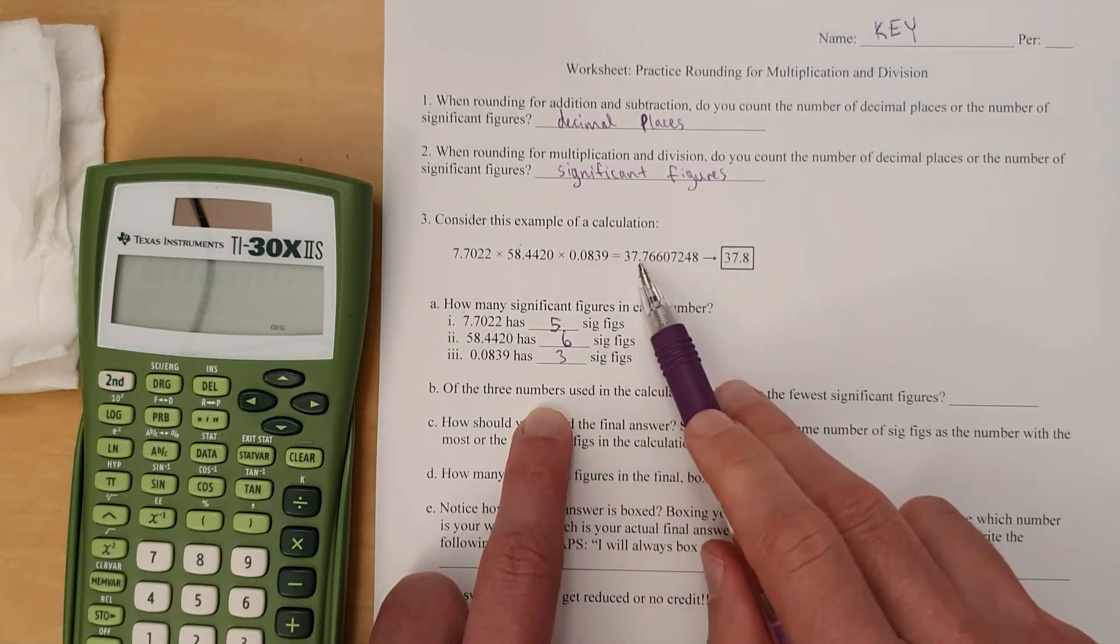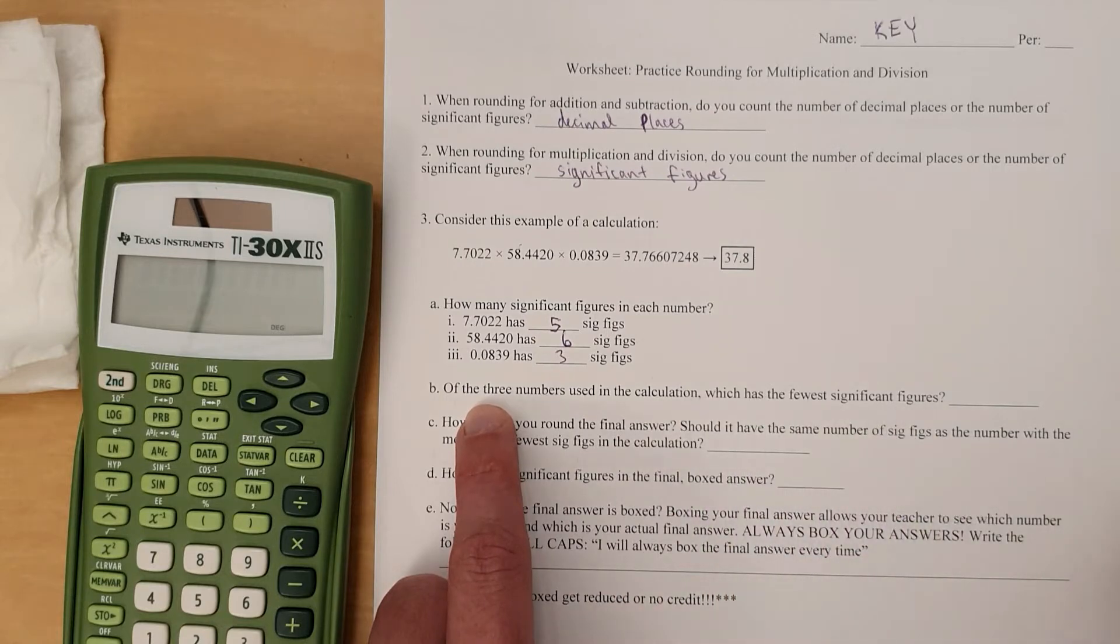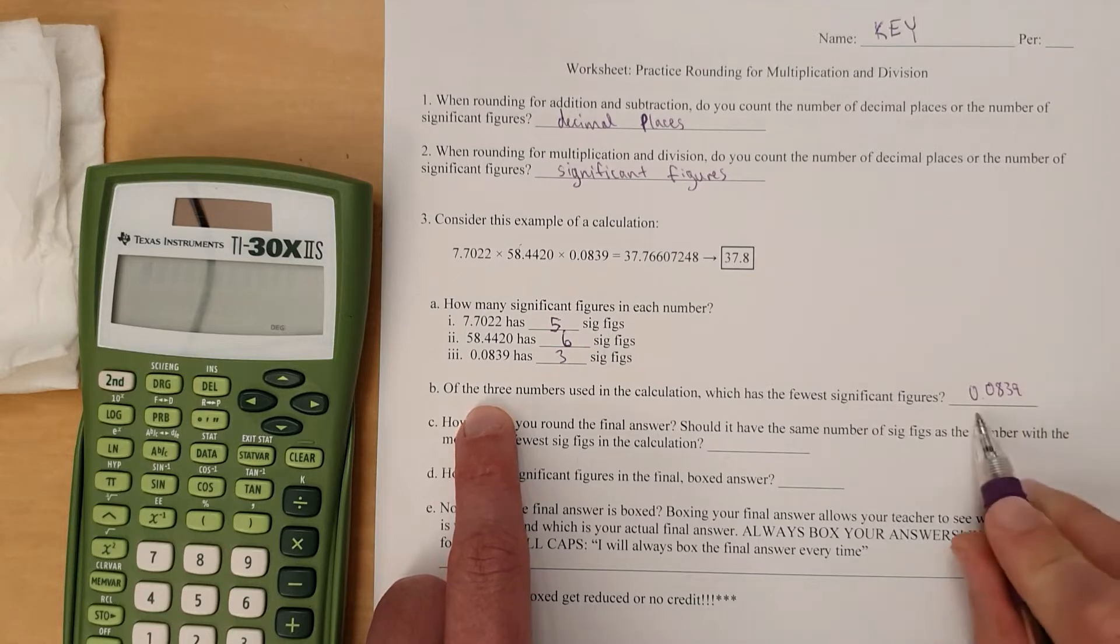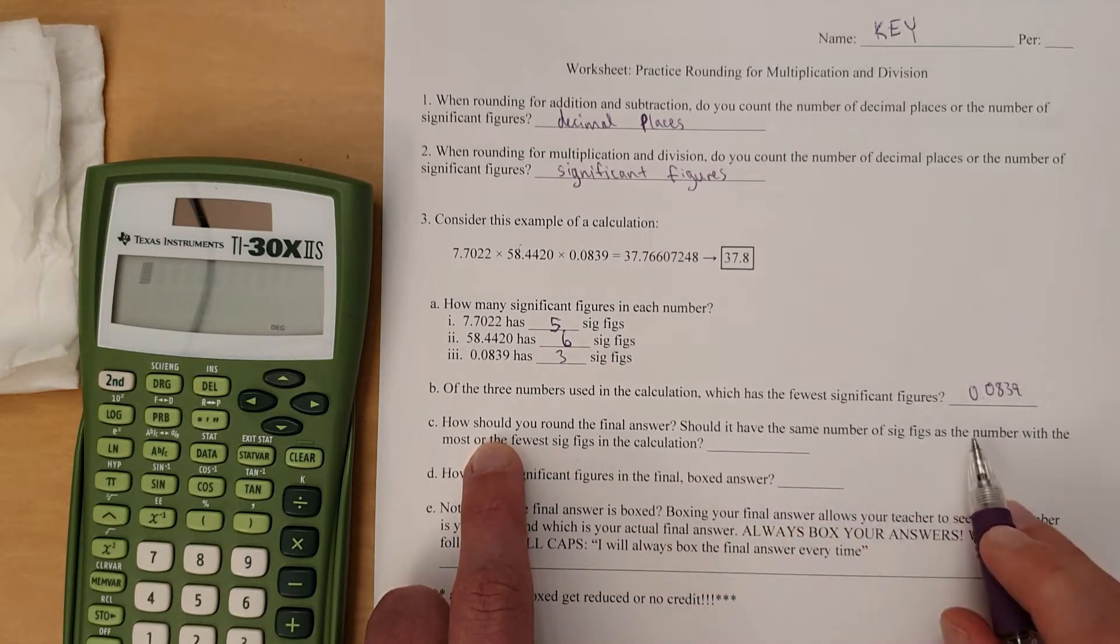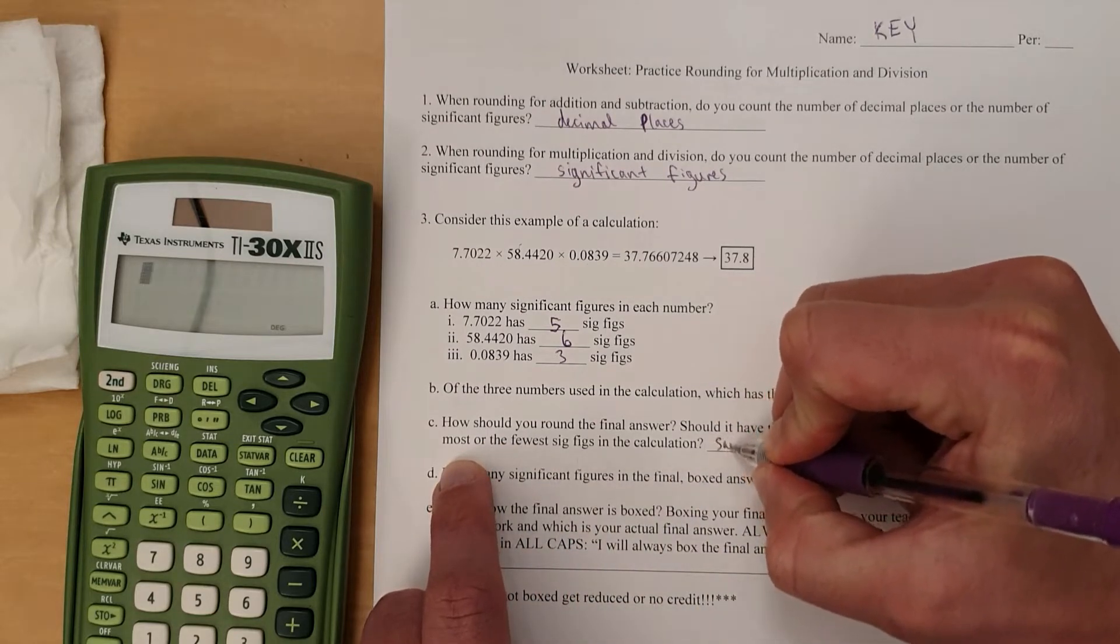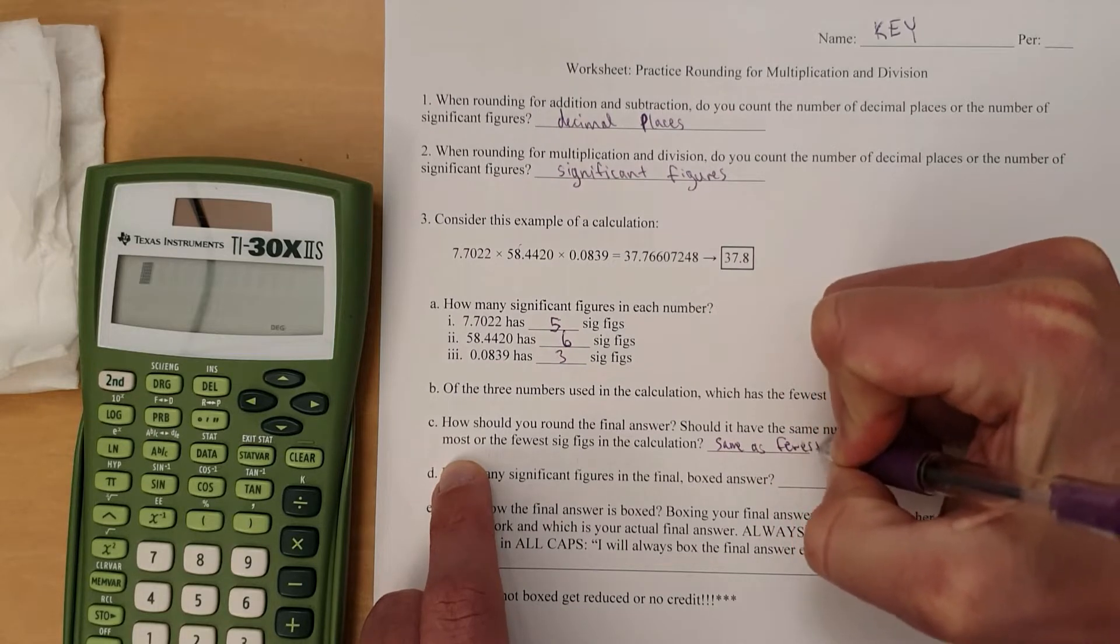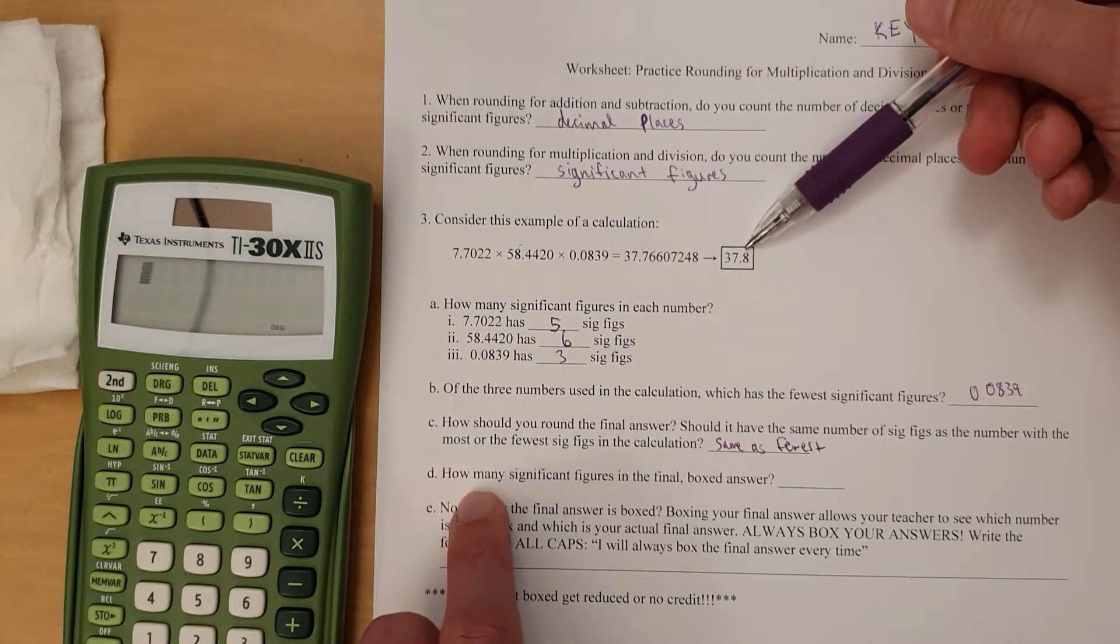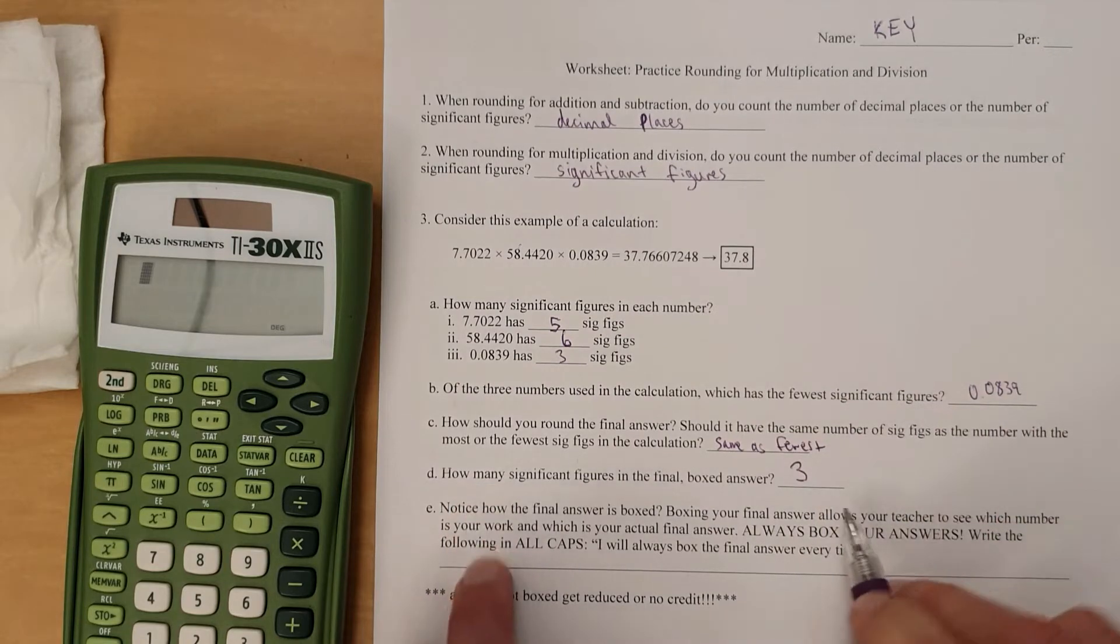So you've got to count how many sig figs in each number. Of the three numbers used, which one has the fewest significant figures? The 0.0839 has the fewest significant figures. How should you round your final answer? Should it have the same number of sig figs as the number with the most, or the fewest sig figs? It should have same as fewest. Since this has only 3 sig figs, your answer should only have 3 significant figures. So that's why there's 3 significant figures there.